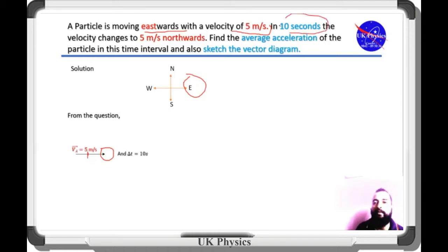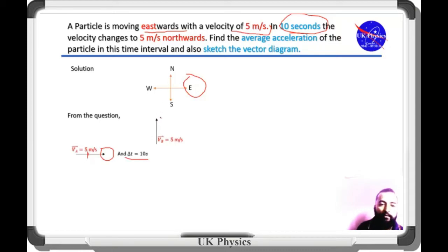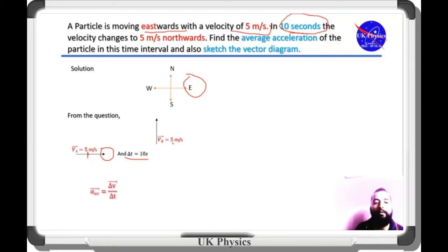In 10 seconds, the velocity got changed to northwards. The magnitude is the same, but the direction has changed. So here we have two vectors — one is Va and another is Vb. We are asked to find the average acceleration of the particle in this time interval and also to sketch the vector diagram.